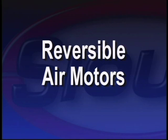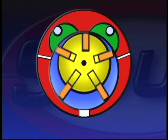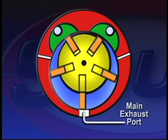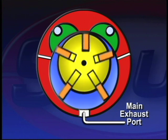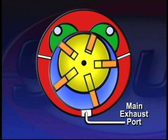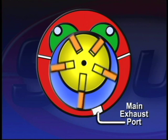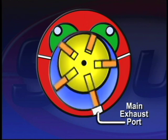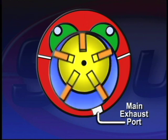Reversible air motors are either balanced or reverse biased. This is accomplished by keeping the main exhaust port in the center of the cylinder or rotating the main exhaust port to the forward rotation side, ensuring more power in reverse than in the forward mode.